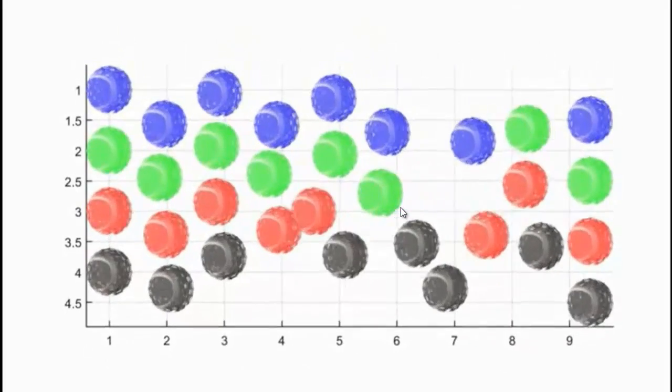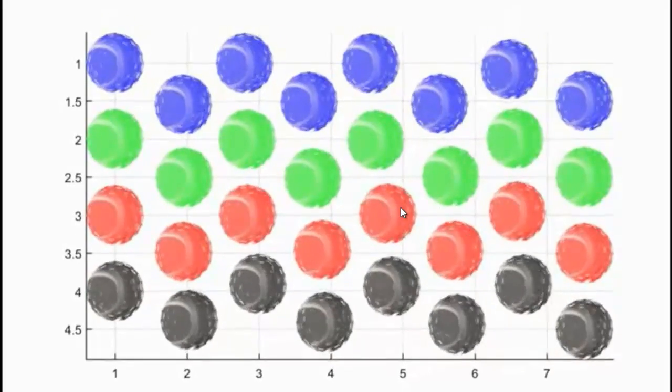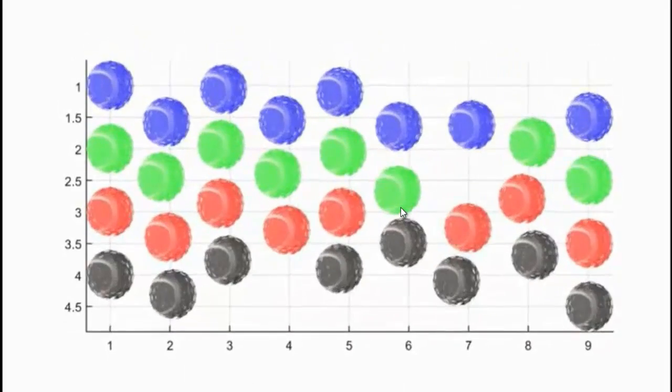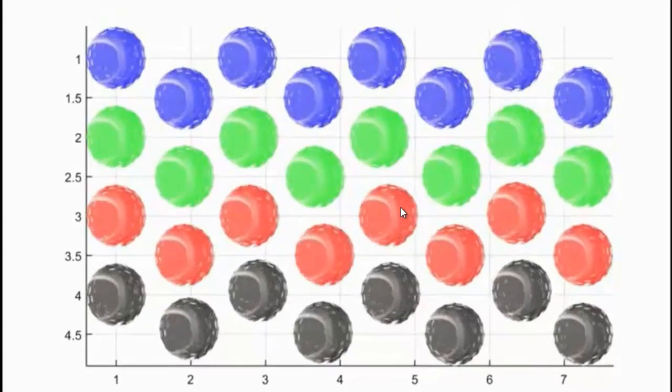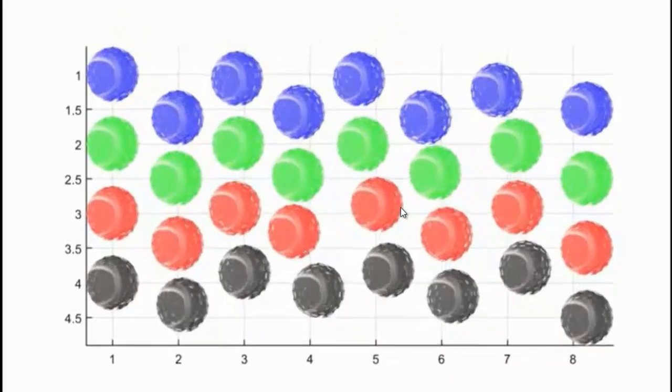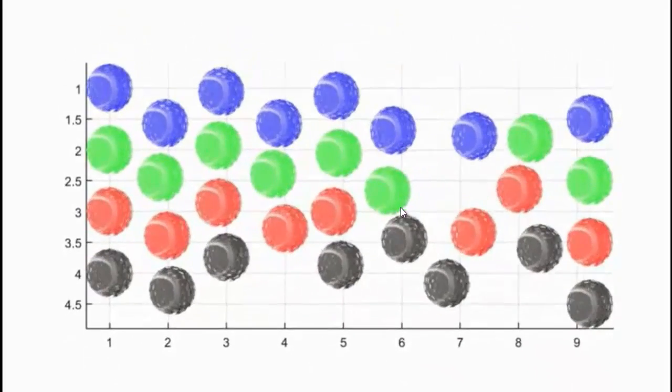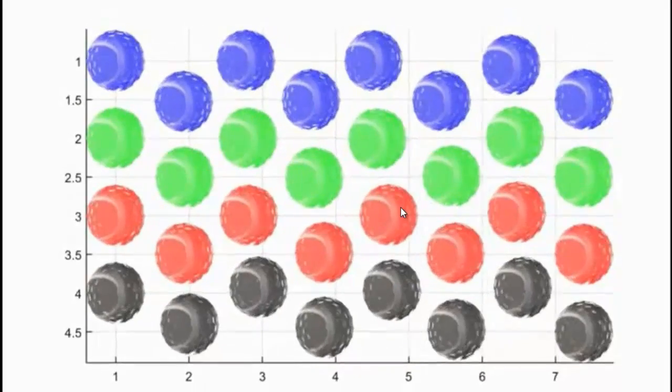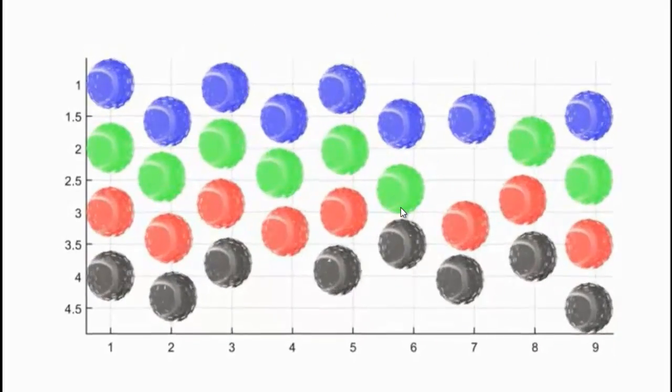The running of dislocations is what I wanted to show in this model. It's a very simplified model because it's two-dimensional and the grains are oriented in this case only in one direction. But it's just to give an impression of how dislocations can run through metal structures.